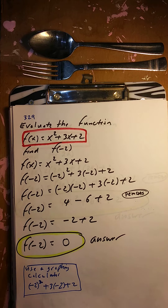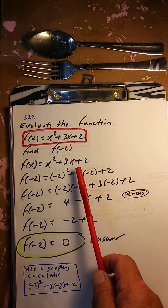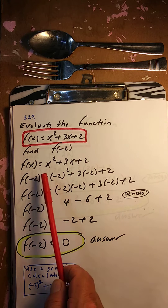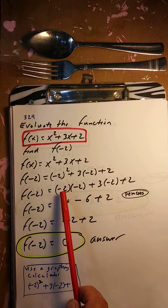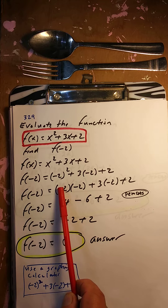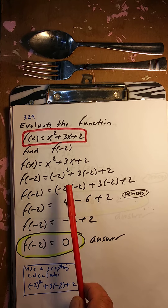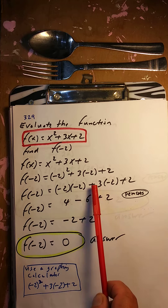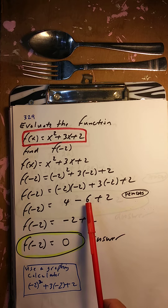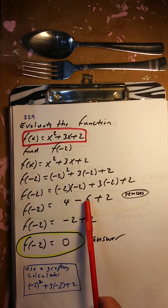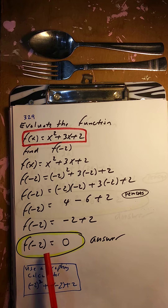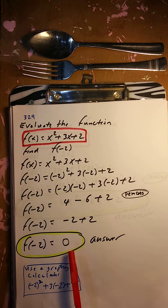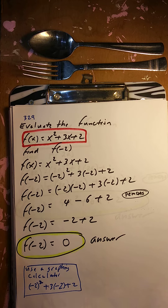Evaluate the function, find f of negative 2. Where the x's are, put negative 2. Negative 2 squared means negative 2 times negative 2 — all of it, see the parentheses. Negative 2 times negative 2 is positive 4. 3 times negative 2 is negative 6, plus 2. So 4 minus 6 is negative 2, and negative 2 plus 2 is 0. So f of negative 2 is 0.